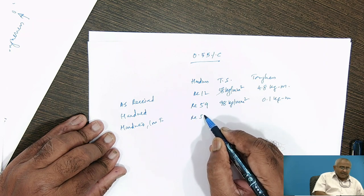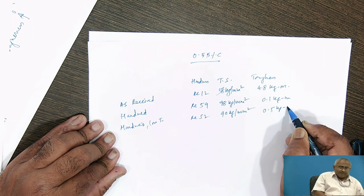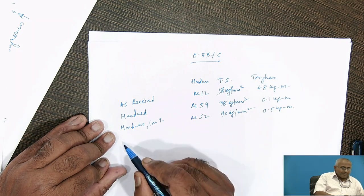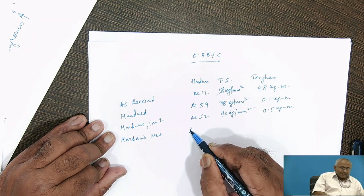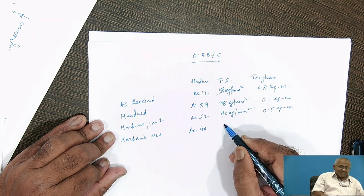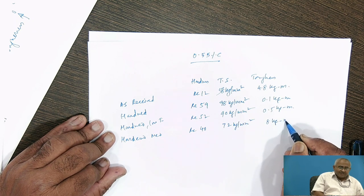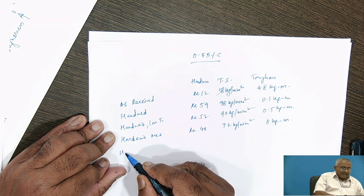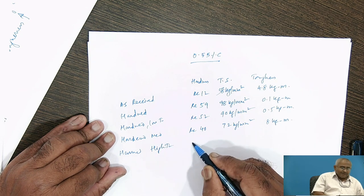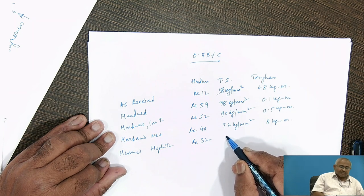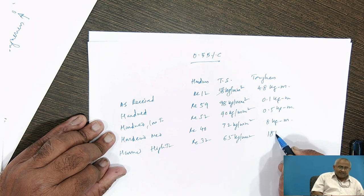After hardening and medium temperature tempering, hardness decreases to RC40, tensile strength decreases to 72 kg/mm², and toughness rises considerably to 8 kg·m. After hardening and high temperature tempering, hardness may be reduced to RC32, tensile strength may be reduced to 65 kg/mm², but toughness reaches 18 kg·m.